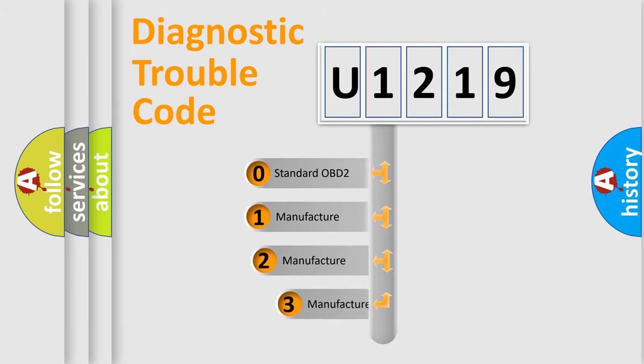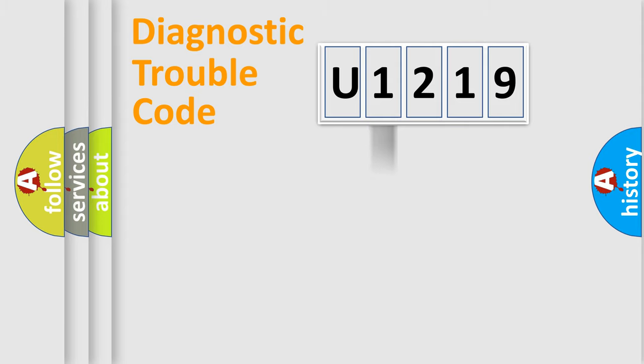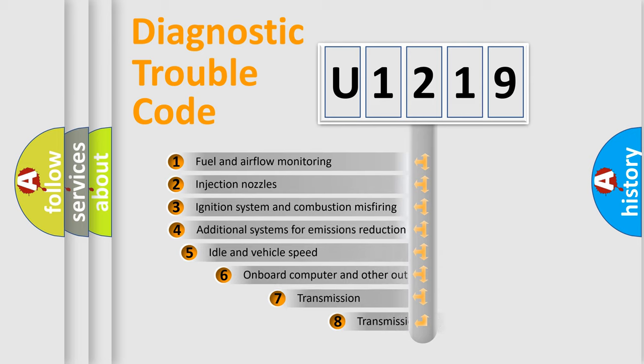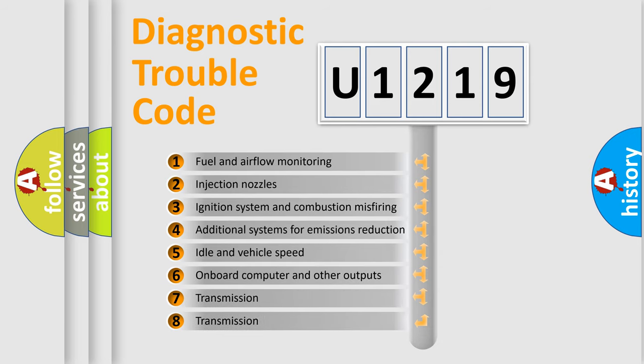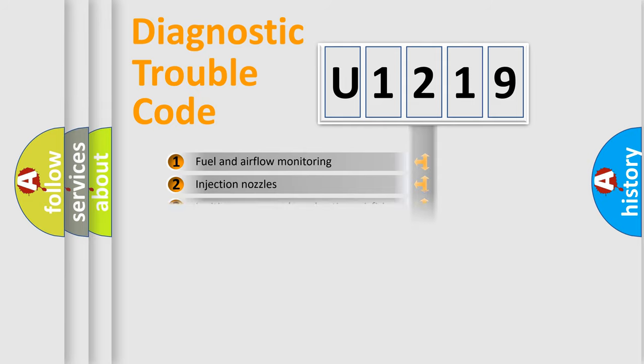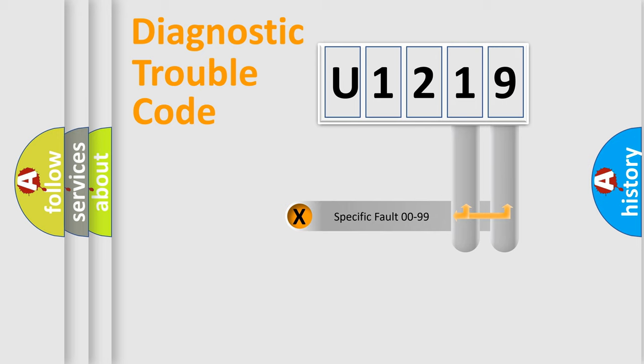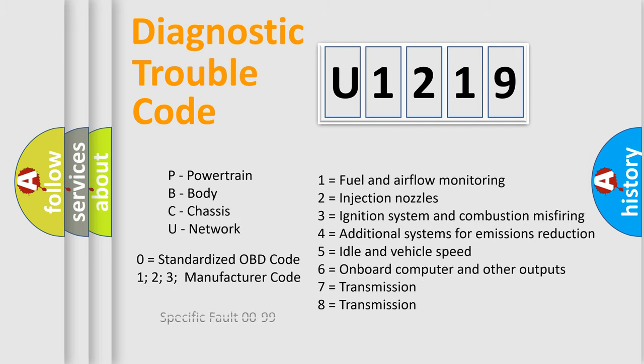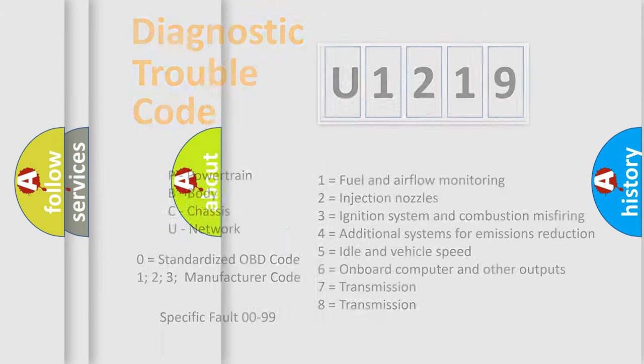If the second character is expressed as zero, it is a standardized error. In the case of numbers 1, 2, or 3, it is a manufacturer-specific expression of the car error. The third character specifies a subset of errors. The distribution shown is valid only for the standardized DTC code. Only the last two characters define the specific fault of the group. Let's not forget that such a division is valid only if the second character code is expressed by the number zero.